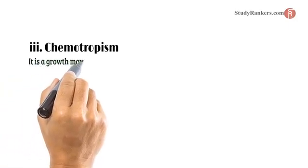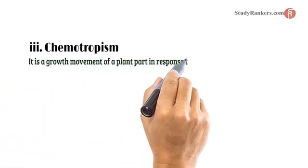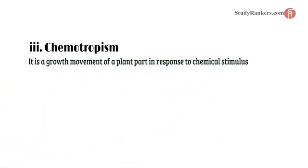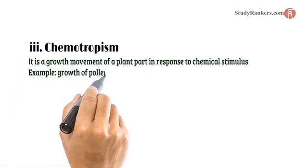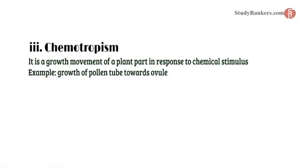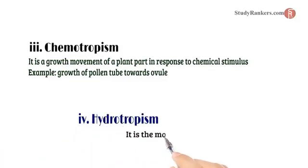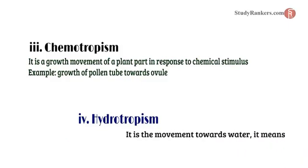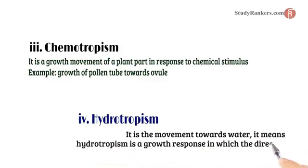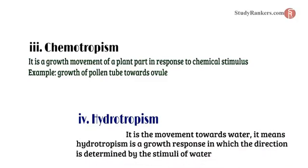Third is chemotropism — a growth movement of a plant part in response to a chemical stimulus. For example, the growth of a pollen tube toward the ovule. Fourth is hydrotropism — movement toward water. Hydrotropism is a growth response in which the direction is determined by the stimulus of water.